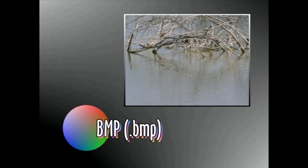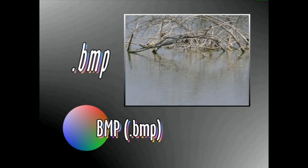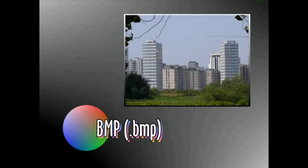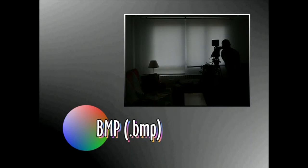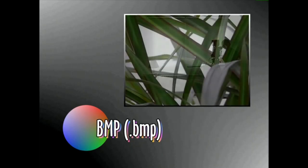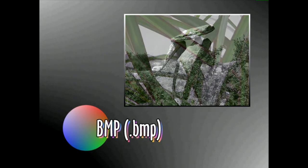BMP bitmap esamoldearen kontrakzioa da. BMP archiboek ez dutenez kompresiorik egiten, oso dira haundiak. Hain zuzen ere, horregatik ez dira interneten erabiltzen. Oroar, ordenagailuaren idaz maia pertsonalizatzeko erabiltzen dira. Formatu horretan gordetako fitxategiak BMP luzapen arekin adierazten dira.